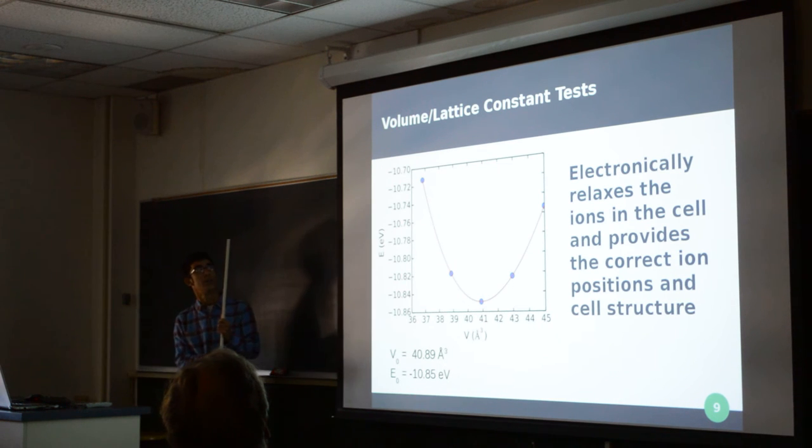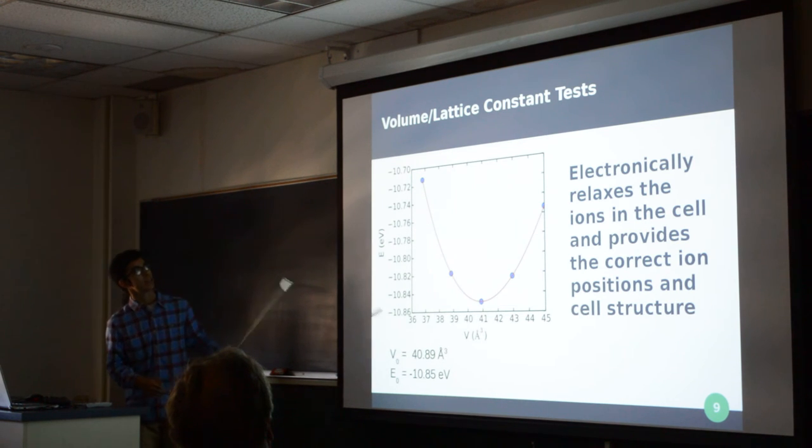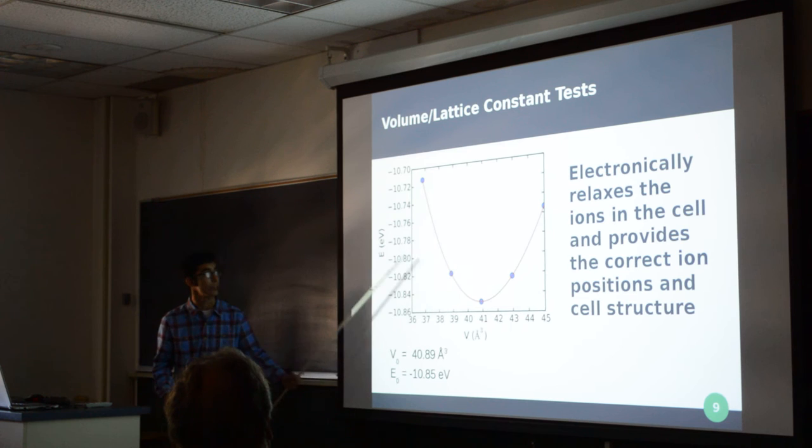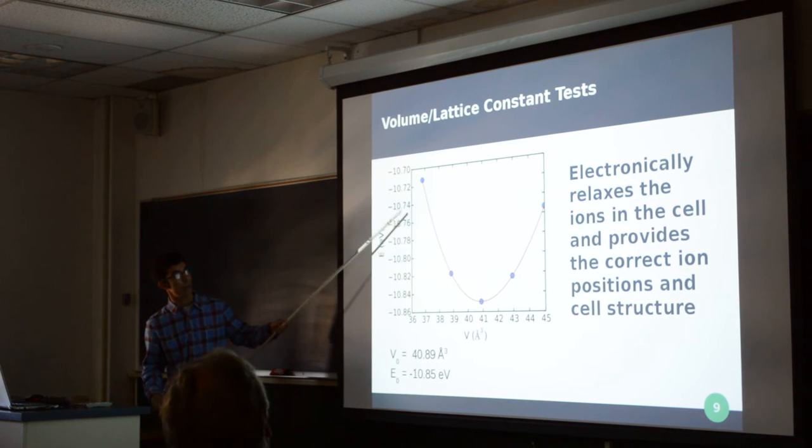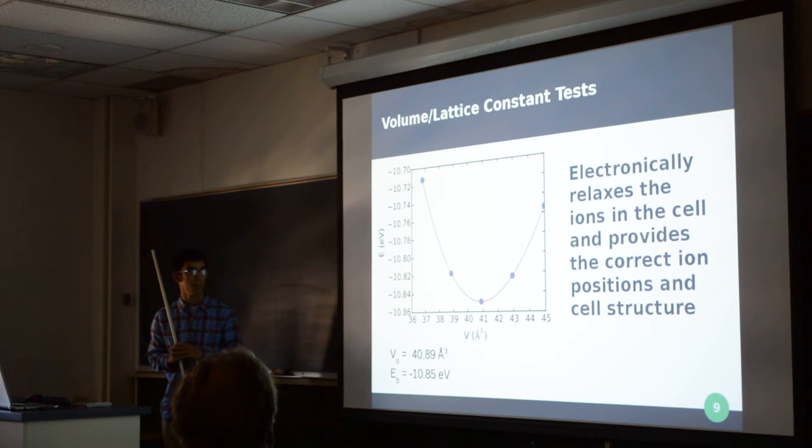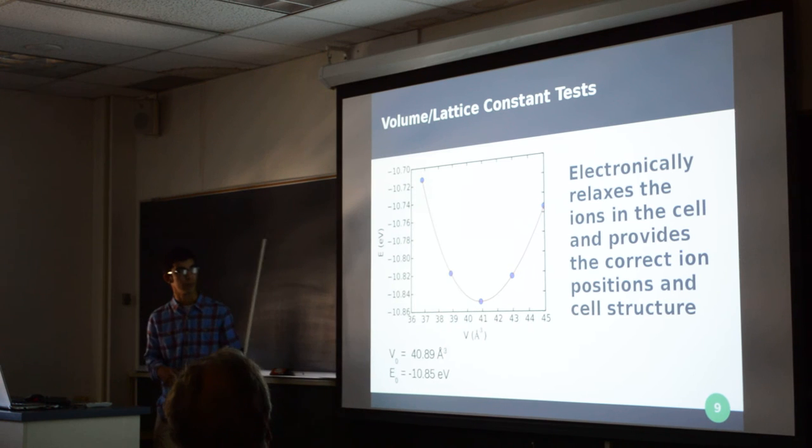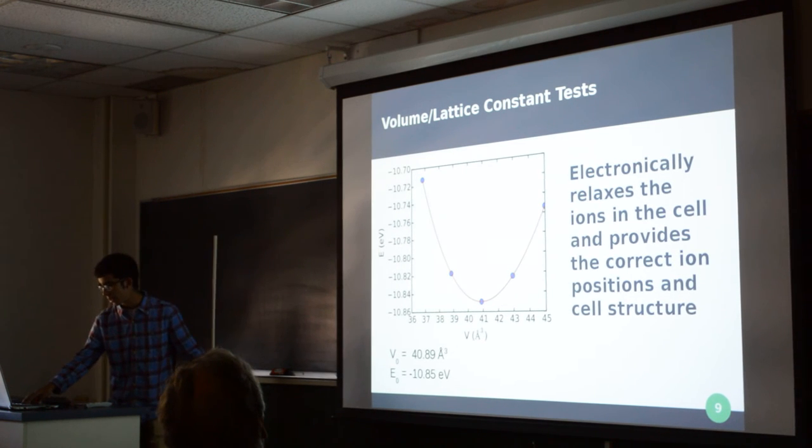The next test that I run is the volume test. And what this does is it electronically relaxes the cell and provides the correct cell structure. It takes lattice constants that correlate to five different volumes along a given range. It relaxes each cell based on those lattice constants and it creates a sort of parabolic fit. And at the minimum of this fit, that is the relaxed structure and that outputs the equilibrium volume and energy. So, we know moving forward that that will be the correct cell structure.